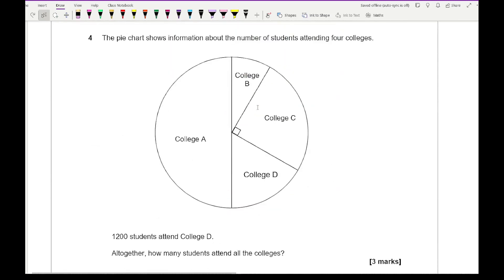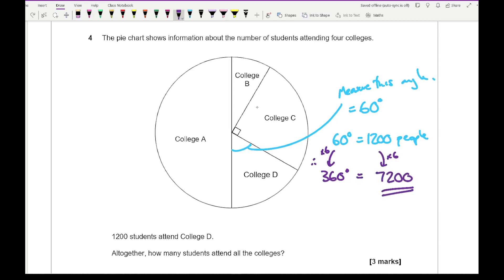Moving on to question 4, the pie chart shows information about the number of students attending four colleges. 1200 students attended college D. First we need to measure this angle using a protractor and we work out it to be around about 60 degrees. So 60 degrees equals 1200 people. We want to know what 360 is, so if I multiply by 6, I get 7200 as the total.